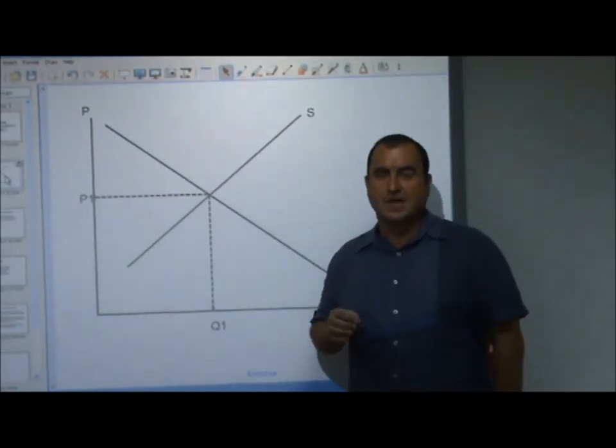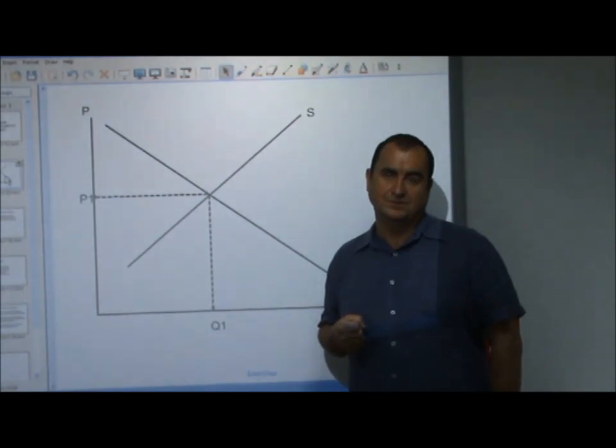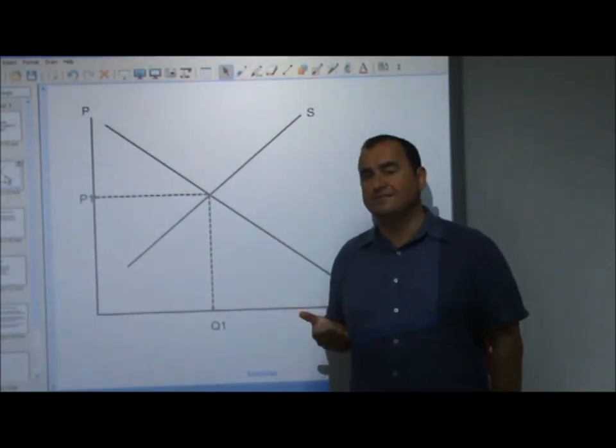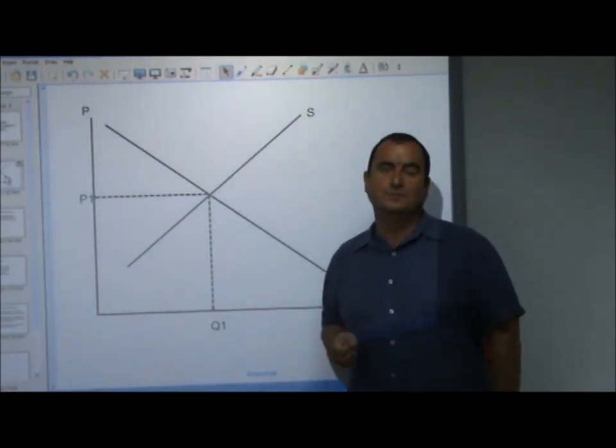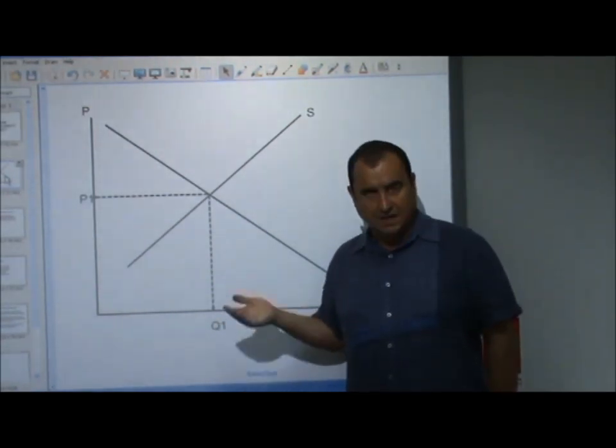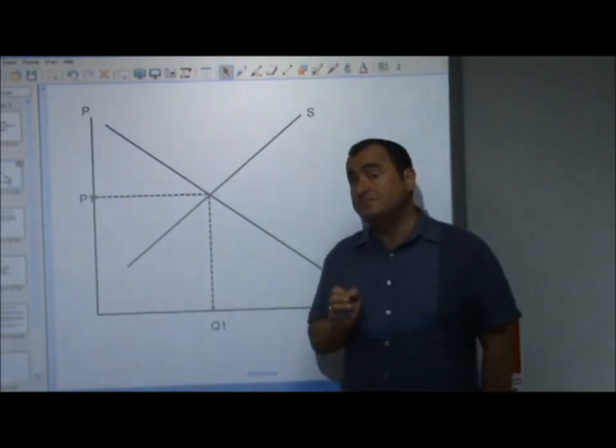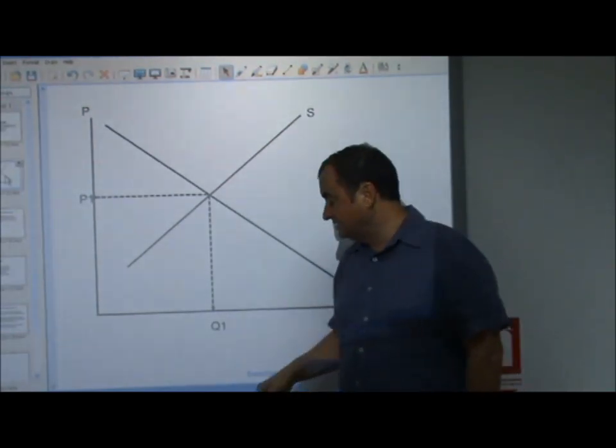At this price, everyone who wishes to buy the good can buy the good, and yet there is none left over where suppliers cannot sell the good. All the goods that are being supplied are sold and all the demand is satisfied. Now that wouldn't be the case were the price at any other level.